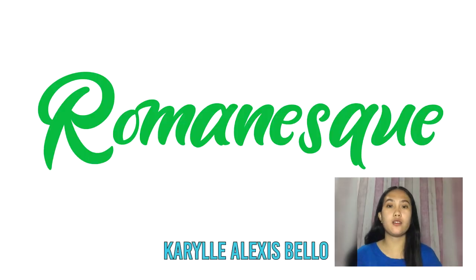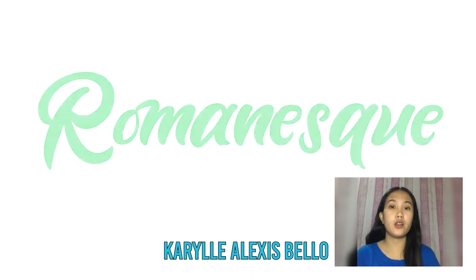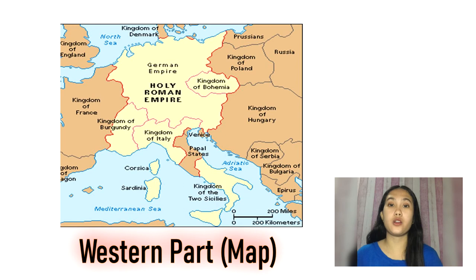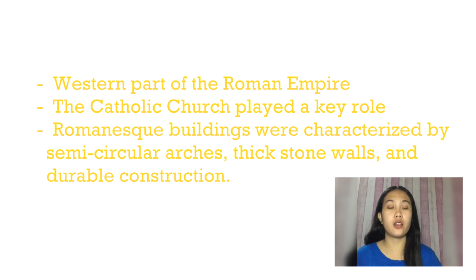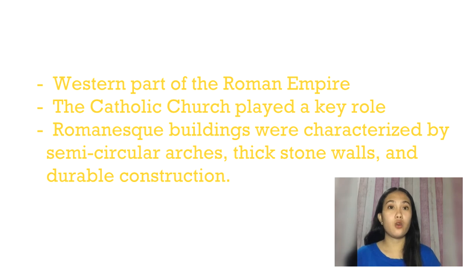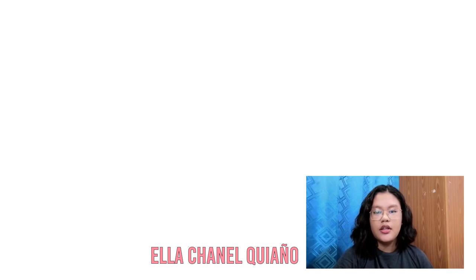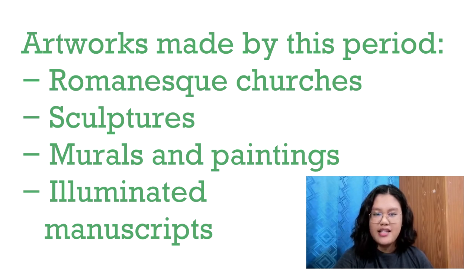Now let us discuss Romanesque art. Unlike Byzantine art, which developed in the eastern part of the Roman Empire, Romanesque art developed in the western part. The Catholic Church played a key role in developing this style, which became prevalent from around 1000 to the rise of the Gothic style in the 12th century. Romanesque churches used art — largely painting and sculpture — to communicate important things about religion. Romanesque buildings were characterized by ceremony, circular arches, thick stone walls, and durable construction.